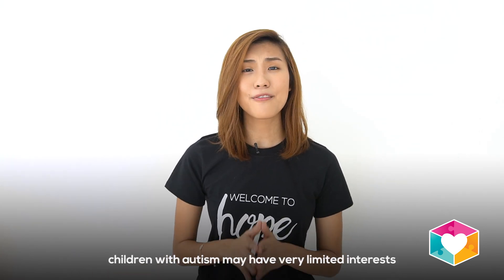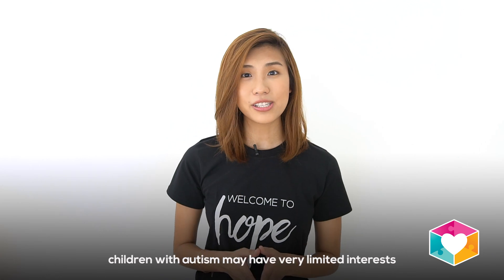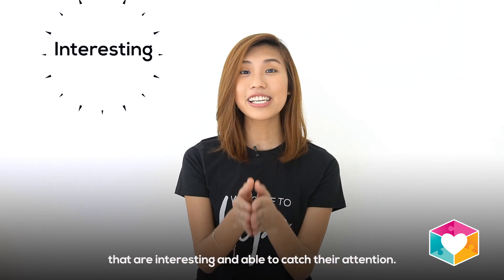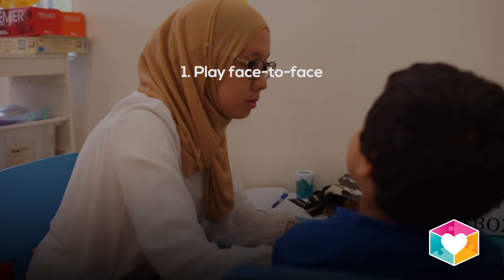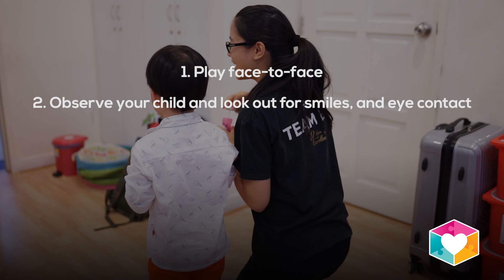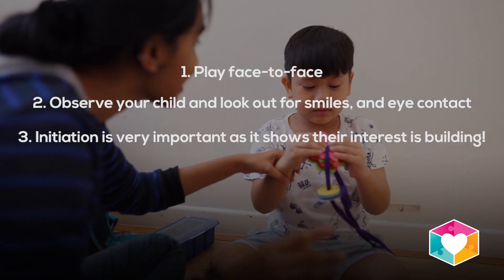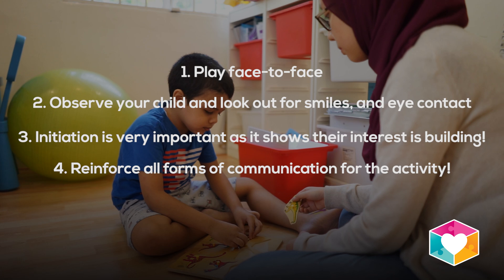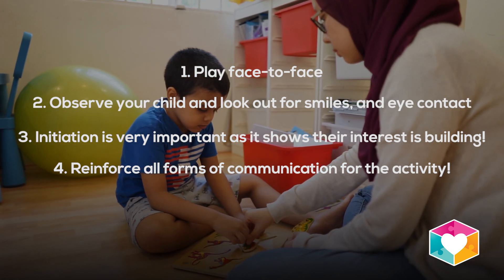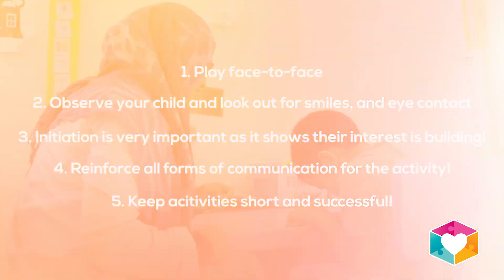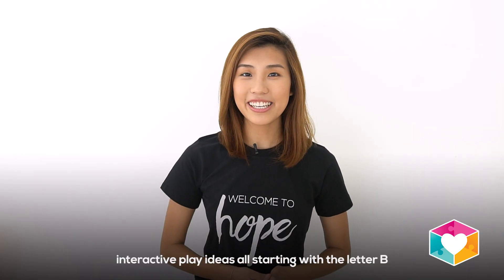As you can see, the key is to choose activities that have a cause and effect element. Just like babies in their first year, children with autism may have very limited interest initially, so it's very important to use activities that are interesting and able to catch their attention. Some important tips: play face to face, observe your child and look out for smiles and eye contact. Initiation is very important as it shows their interest is building. Reinforce all forms of communication for the activity and keep the activities short and successful.